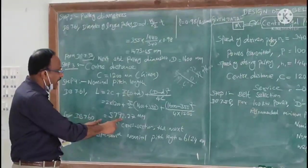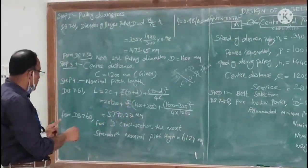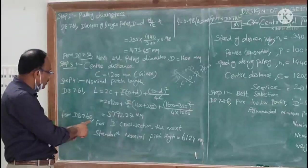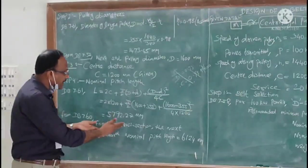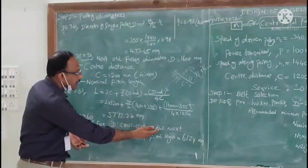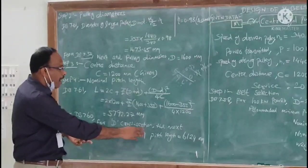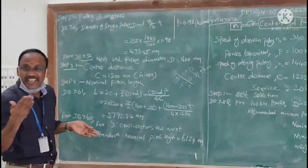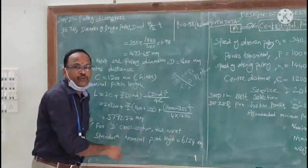We can get the value as 5792.27 millimeter. From the data book page number 7.60 for the T cross section V-belt, the next standard nominal pitch length available is 6124 millimeter.